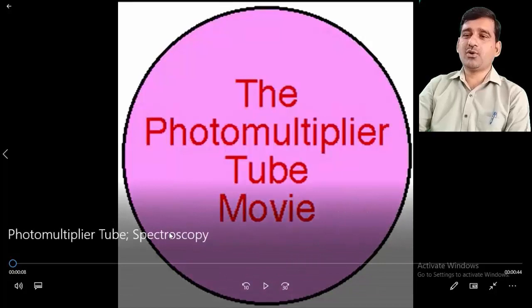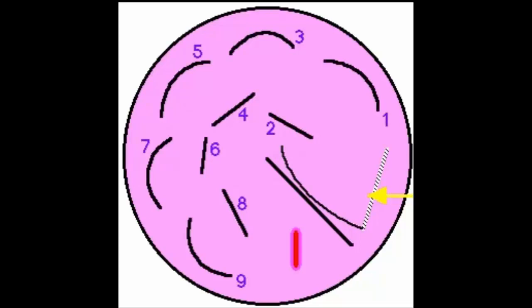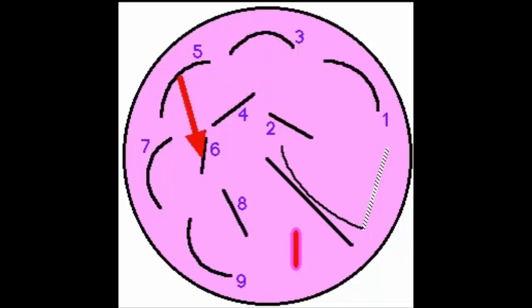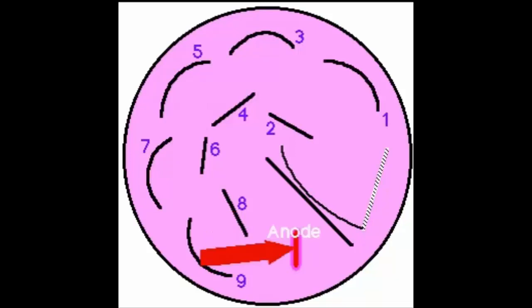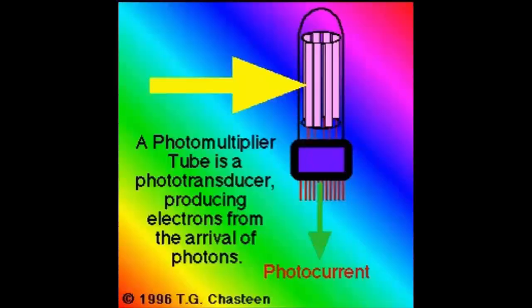The PMT converts incoming light into a flow of electrons. Photons enter the tube and strike the photoemissive photocathode, causing electron emission toward dynode number one. Due to the electrical potential difference between each dynode, arriving electrons cause emission of a larger number of electrons toward the next dynode — this is called electron multiplication. The final electron cascade from the last dynode is collected at the anode, constituting the photocurrent. The result is a flow of electrons proportional to the intensity of the incident light.